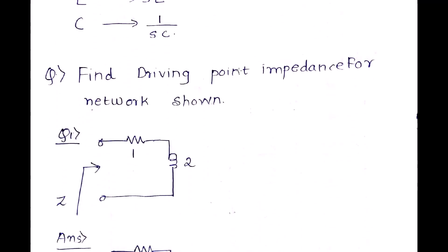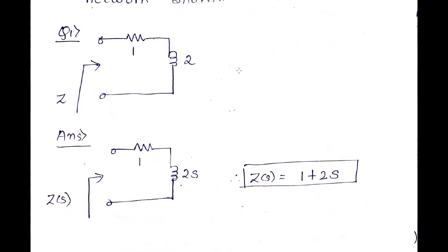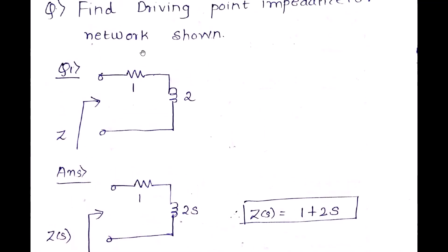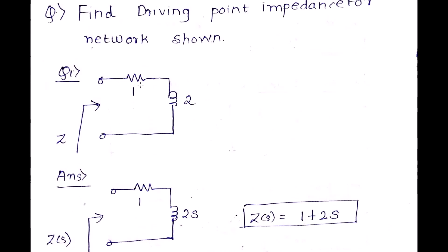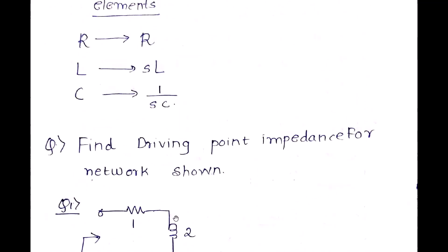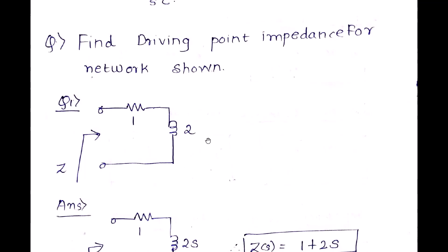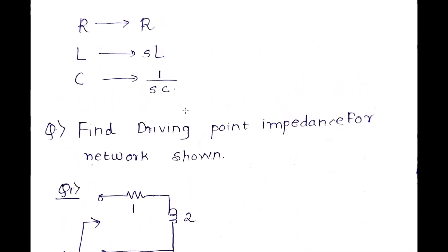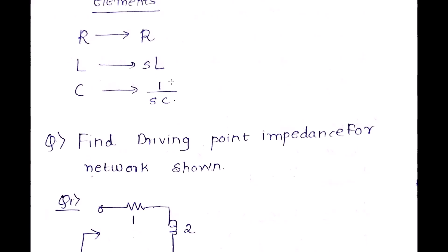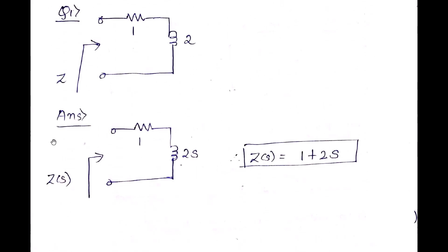The Laplace transform values of network elements are: R remains R, L becomes sL, and C becomes 1/(sC). To find the driving point impedance Z(s) of a network, convert all elements to their Laplace equivalents. For a resistor of 1 Ω and inductor of 2 H in series, the resistor stays 1 and the inductor becomes 2s, giving total impedance Z(s) = 1 + 2s.